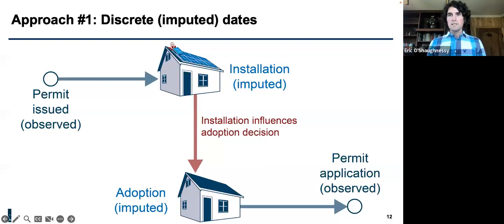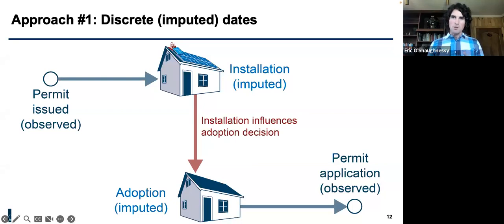Likewise, for installation it's generally difficult to observe the actual install date in data. We impute that in a similar way: we have reliable dates when permits were issued, and through previous research from the National Renewable Energy Lab we know the average number of days from permit issuance to system installation. We move that date forward to get an imputed installation date. Essentially, we're modeling the effects of imputed installations on imputed adoptions — the same as other peer effects models in the past, but we think we're getting closer to the actual dates.